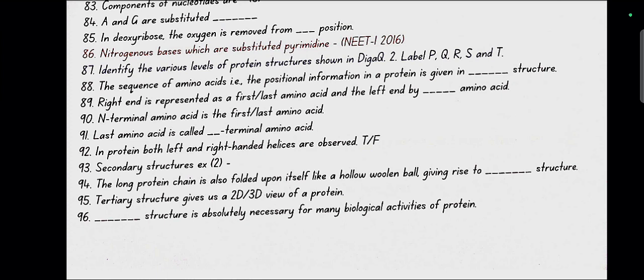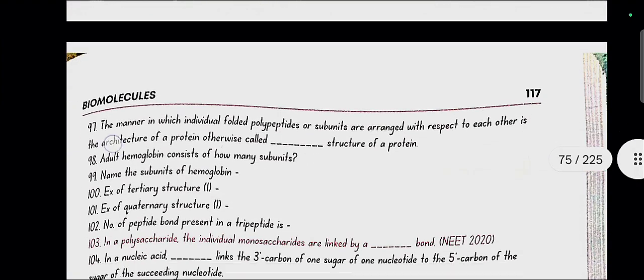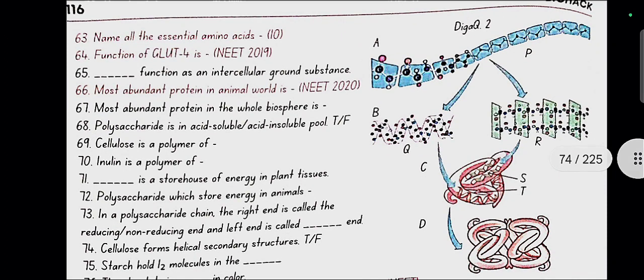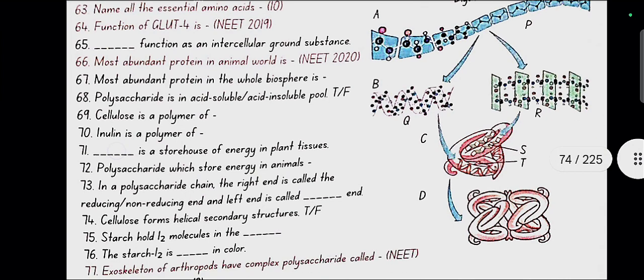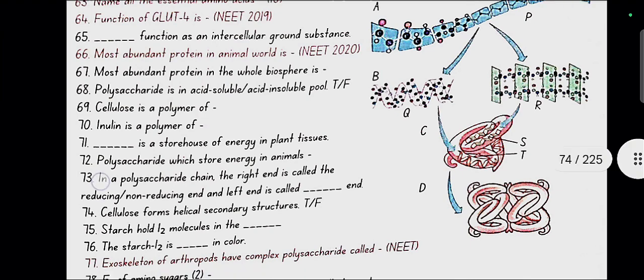Identify the various levels of protein structure shown in diagram 2 label P, Q, R, S and T. In diagram 2, A is the primary structure where P is the polypeptide. B is the secondary structure where Q is the alpha helix and R is beta pleated sheet. C is the tertiary structure where S is hydrogen bond and T is disulfide bond. D is the quaternary structure.